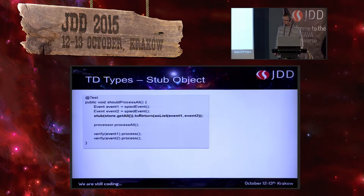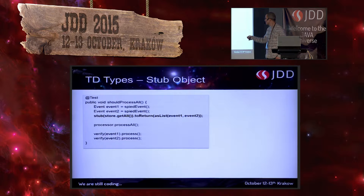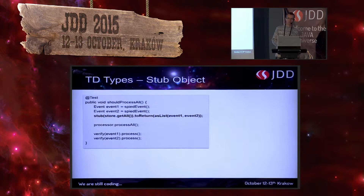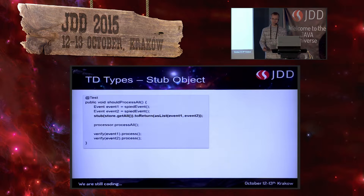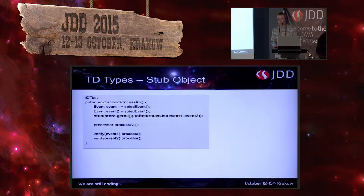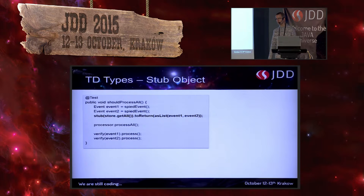There is one more thing worth mentioning. Here, there could be a method with parameters. But a stub assumes that we don't care about the parameter. So if our input could be any object of a particular type, that would also be a stub. If we should depend on input, that will come later.